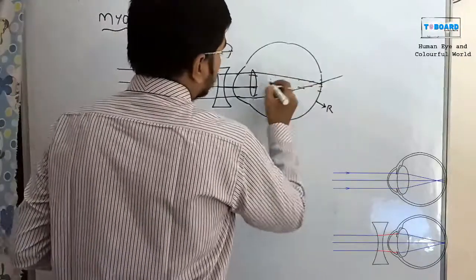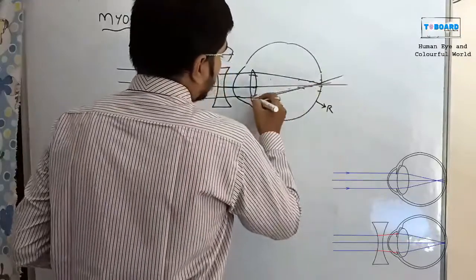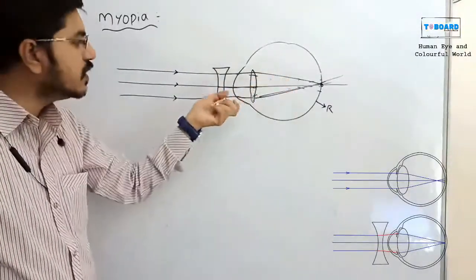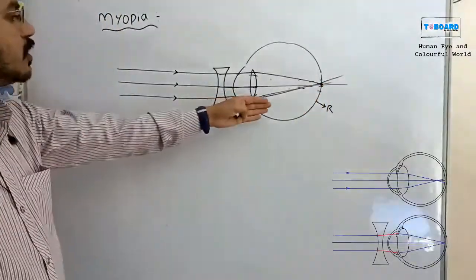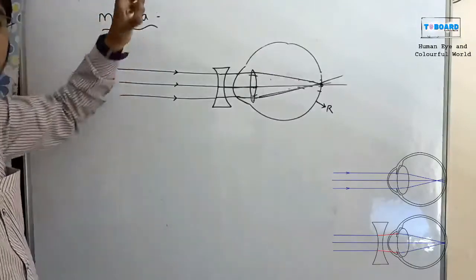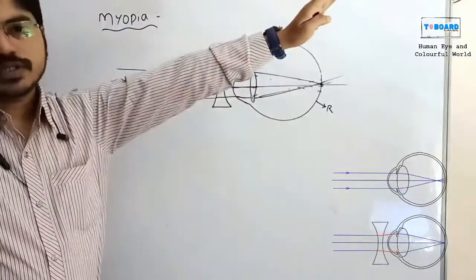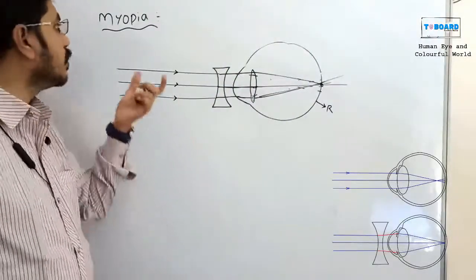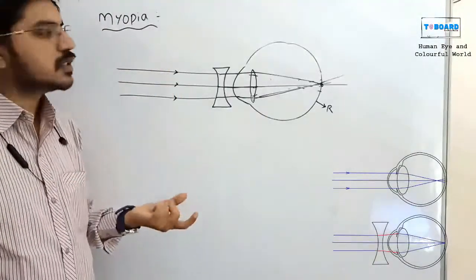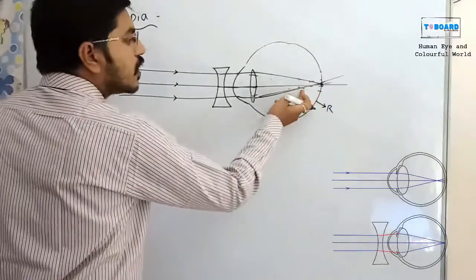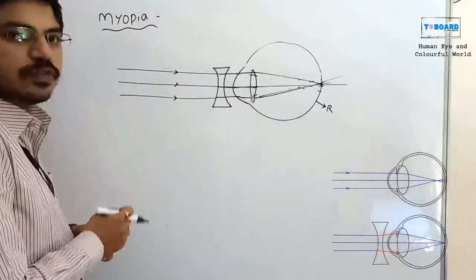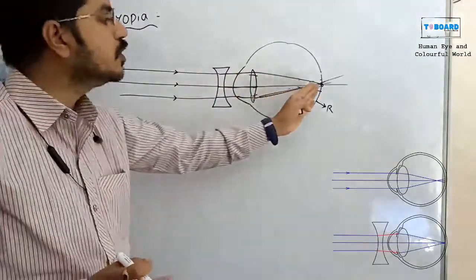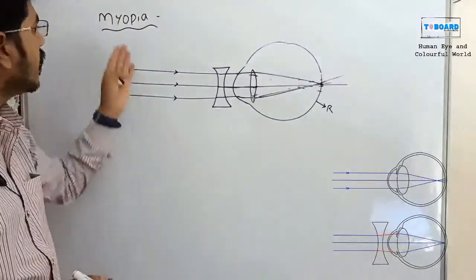After using the concave lens, all three rays meet on the retina and the image is clear. Myopia (near-sightedness) forms an image in front of the retina; it is corrected using a biconcave lens placed in front of the eye.